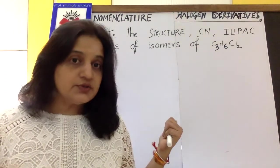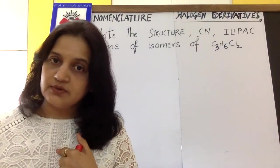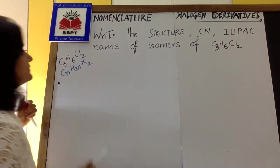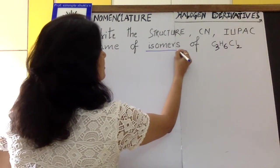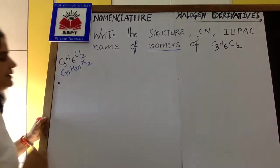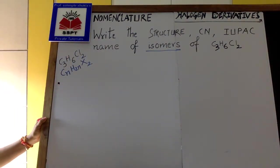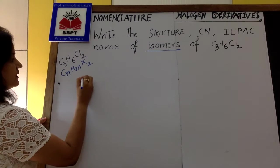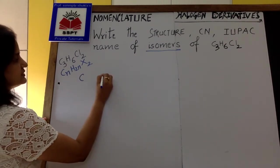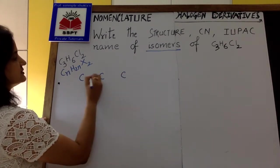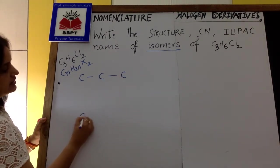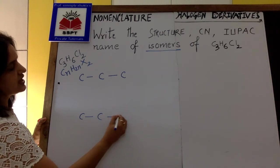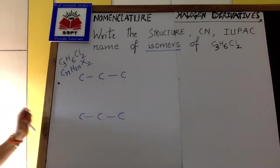Now according to the question, I want to find out how many isomers of this formula I can make. Let us see. I can write the three carbons continuous one after the other, and I can write them continuous only. Obviously, how can you make a branch with three carbons?